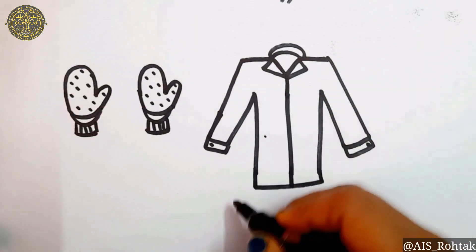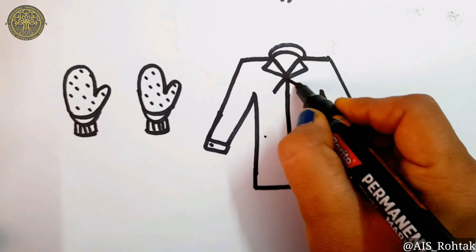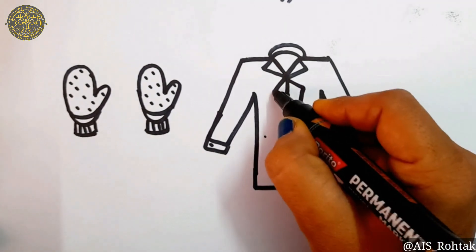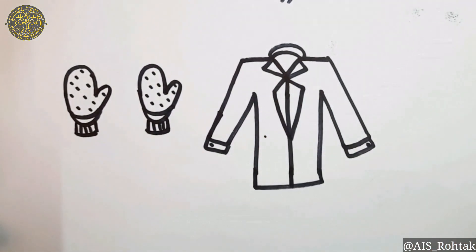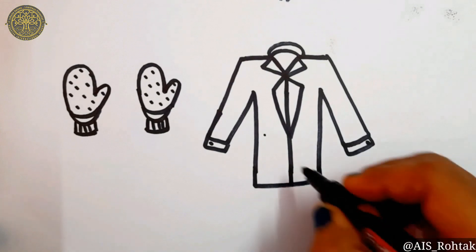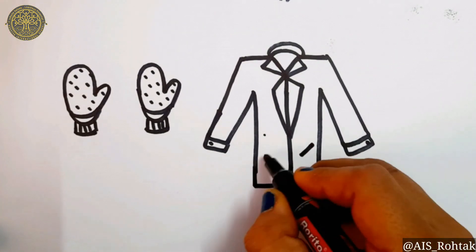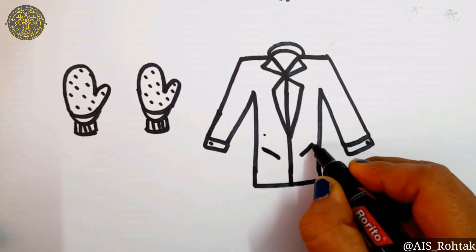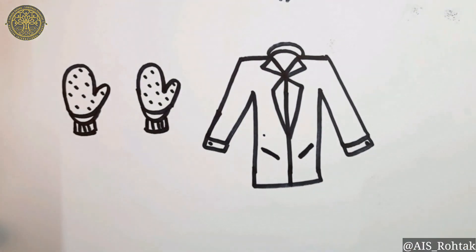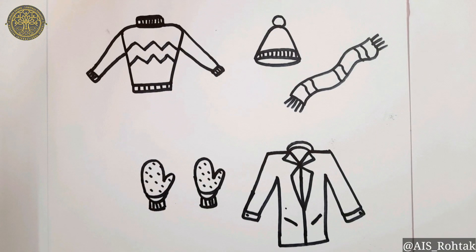Now do designing like this. Draw slant lines and join it to the center line. And for the pocket, just draw slant lines. So, our winter clothes are ready. Try this at home. Thank you so much.